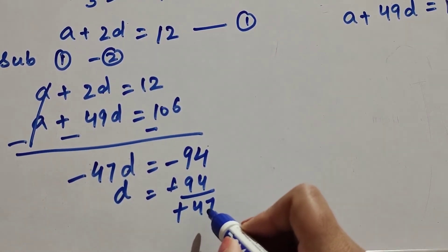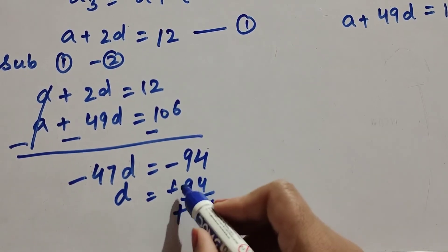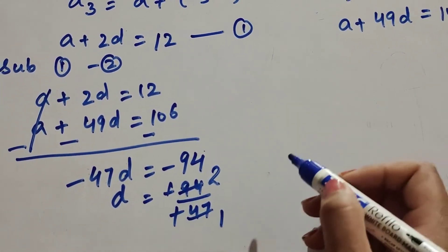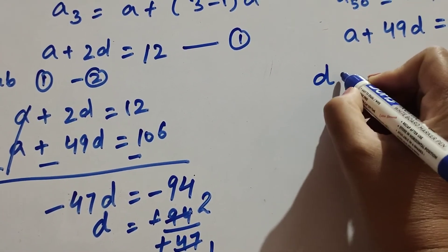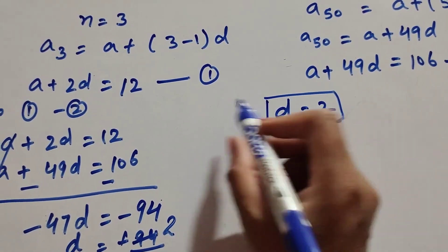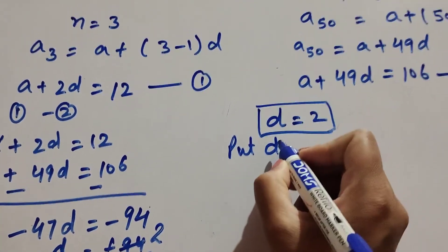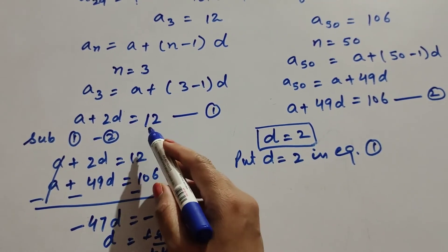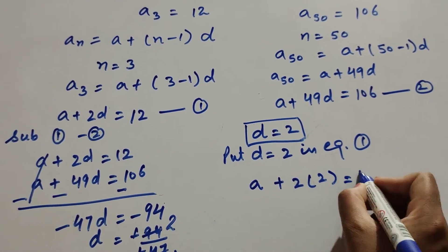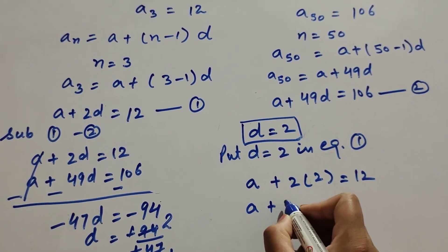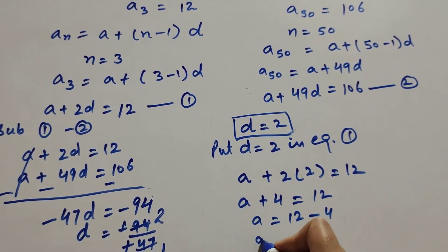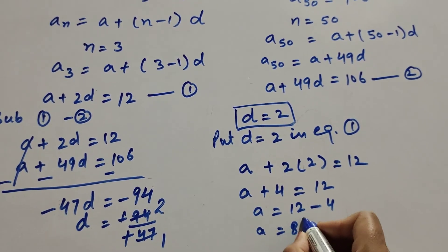Transposing minus 47 to the right-hand side, minus and minus cancel out. 94 divided by 47: 47 twos are 94. So the common difference D is equal to 2. Now we put the value of D equal to 2 in equation number 1: A plus 2D equals 12, so A plus 2 into 2 equals 12, giving A plus 4 equals 12. Transposing 4 to the right-hand side, A equals 12 minus 4, so A is equal to 8.